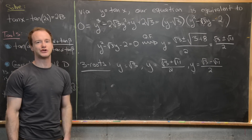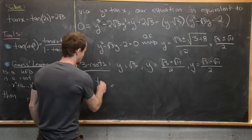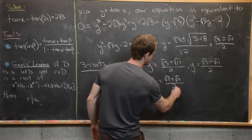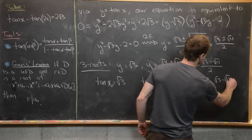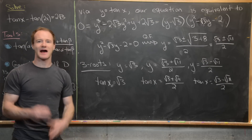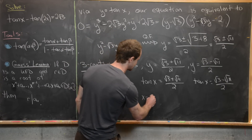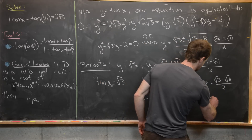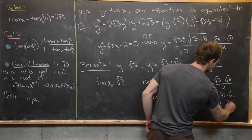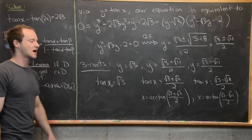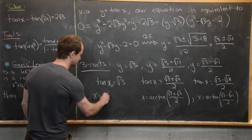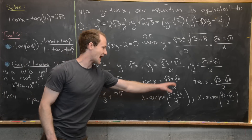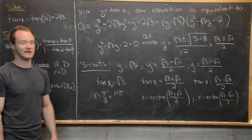Now we use these roots to find solutions to the original equation, meaning we solve tangent of x equals each root. The last two give x equals arctan of (root 3 plus root 11) over 2 and x equals arctan of (root 3 minus root 11) over 2. Since tangent of x equals root 3 when x equals pi over 3, we can add any multiple of pi to all three solutions to obtain infinitely many solutions.